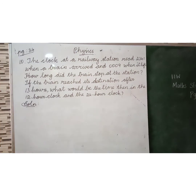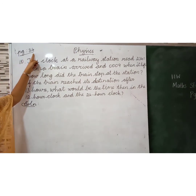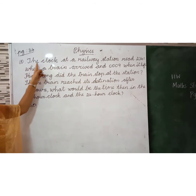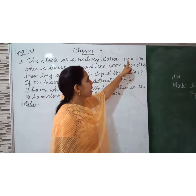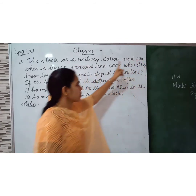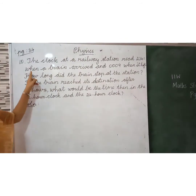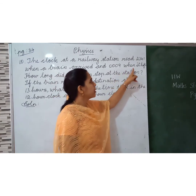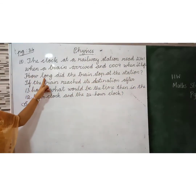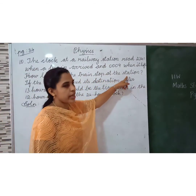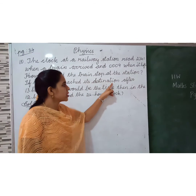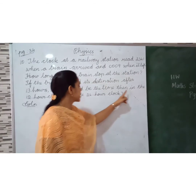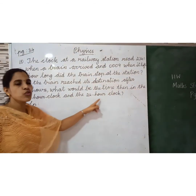Shall we do one problem now? This is from the book, page number 34. The clock at a railway station reads 23 hours and 41 minutes in 24-hour clock. When a train arrived 9 minutes later, how long did the train stop at the station? If the train reaches its destination after 13 hours, what would be the time in the 12-hour clock and the 24-hour clock?